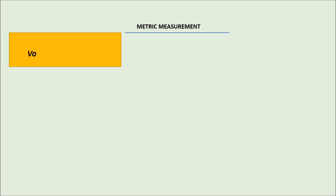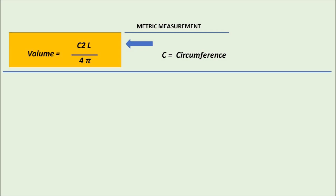Volume is equal to C squared times L divided by 4 pi. The circumference is equal to C. This means circumference. We find the circumference. C squared times L divided by 4 pi — this is how the formula comes. We have to use this radius and apply the formula: pi r squared h, which we convert using C squared L divided by 4 pi. That is how the circumference is used.